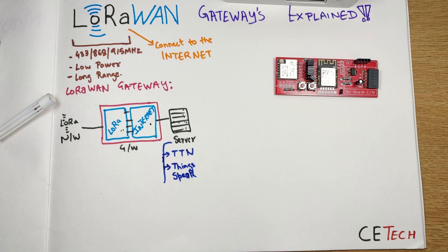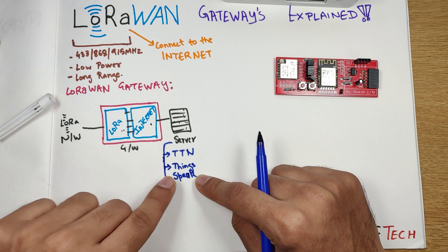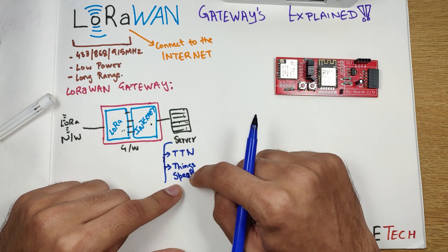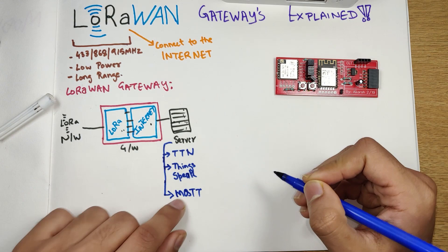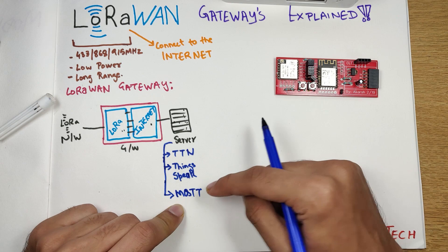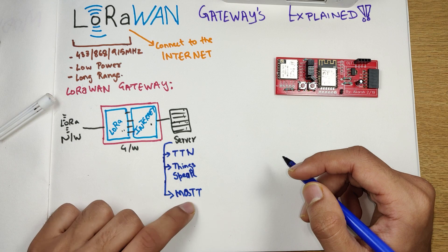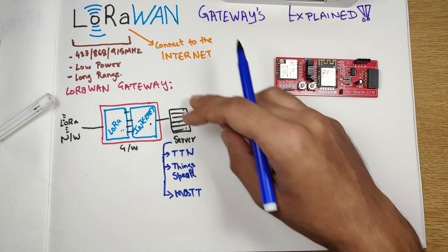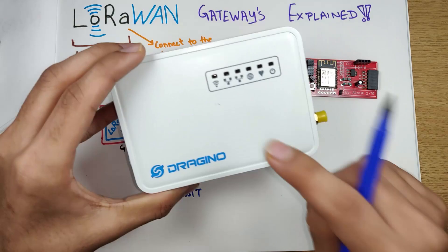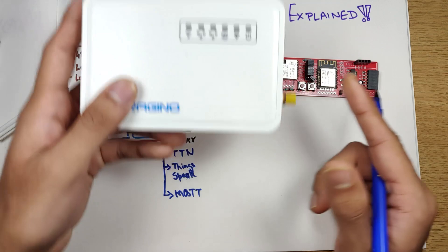The ThingSpeak platform is also a very popular platform for hobbyists — I've done a Wi-Fi based video on the ThingSpeak network, you can find it on the channel. Moving on, we have MQTT. MQTT is a type of server protocol; you can find any good MQTT server to connect your LoRa-based gateway to and exchange information. MQTT servers are pretty fast because they require small messages. I've done a video on MQTT as well — check it out on my channel. I've also done videos configuring the Dragino gateways to the Things Network.